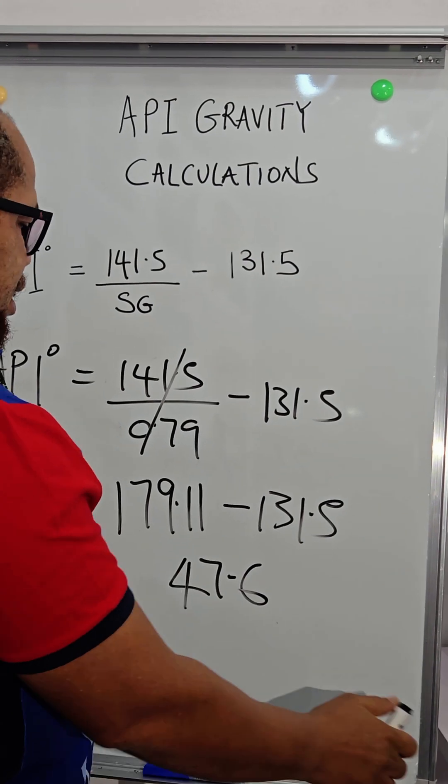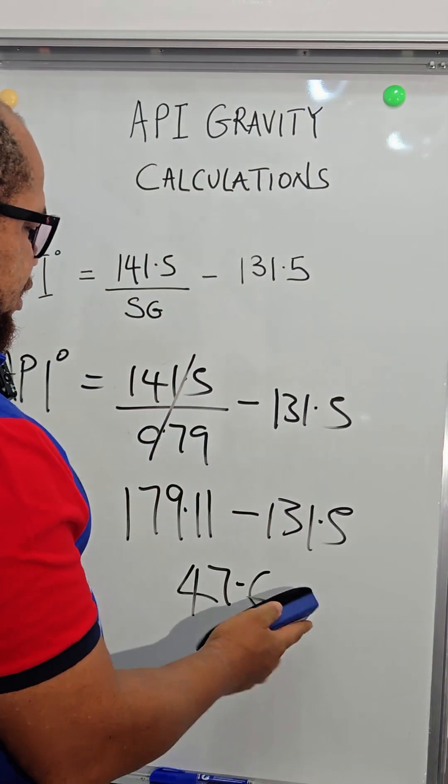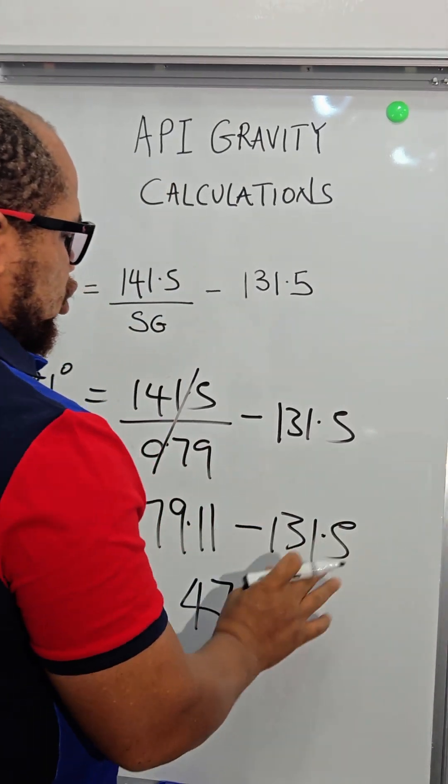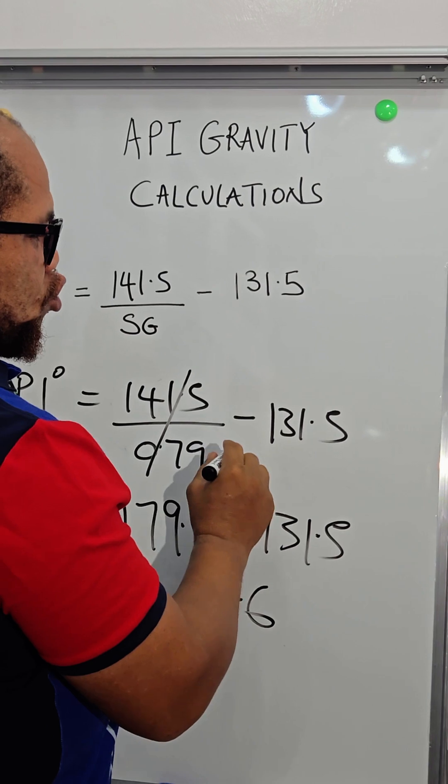And this is your API. Now, the API of this particular fluid is 47.6. What does this even mean? So I need us to know that if you perform this calculation and you see any crude that the API is less than 20,